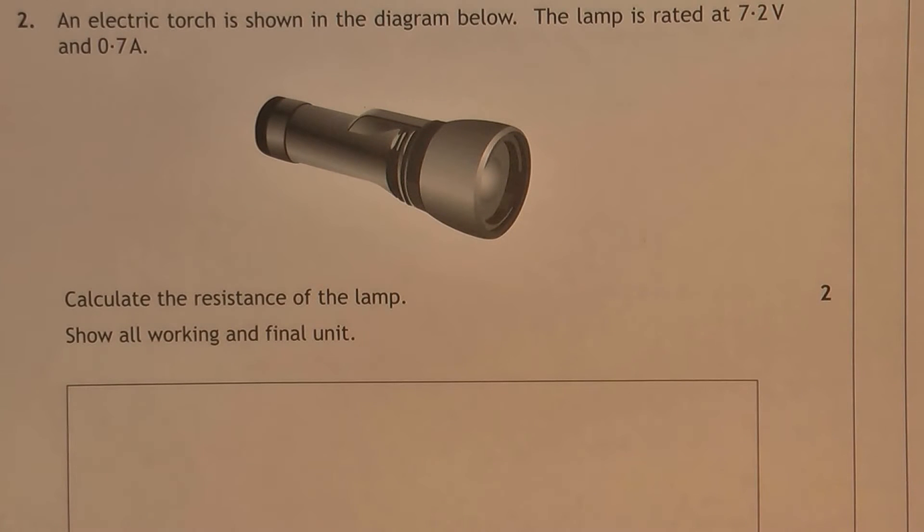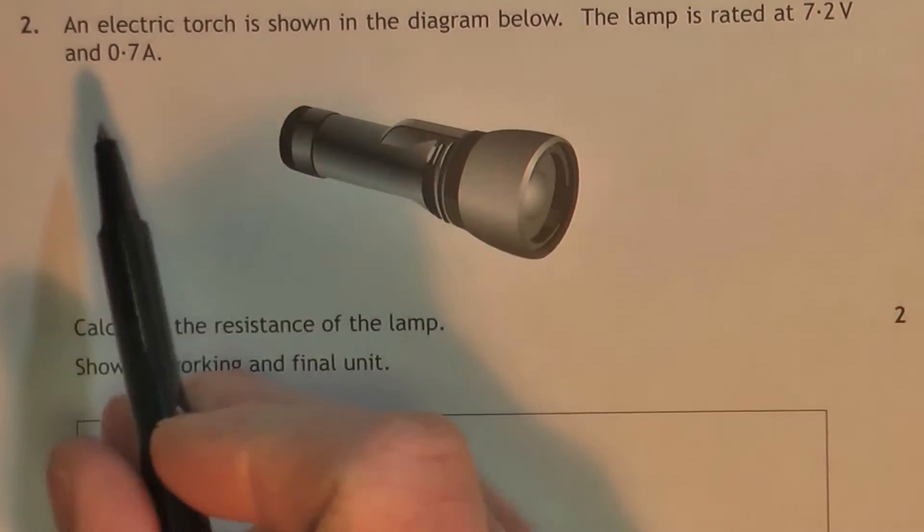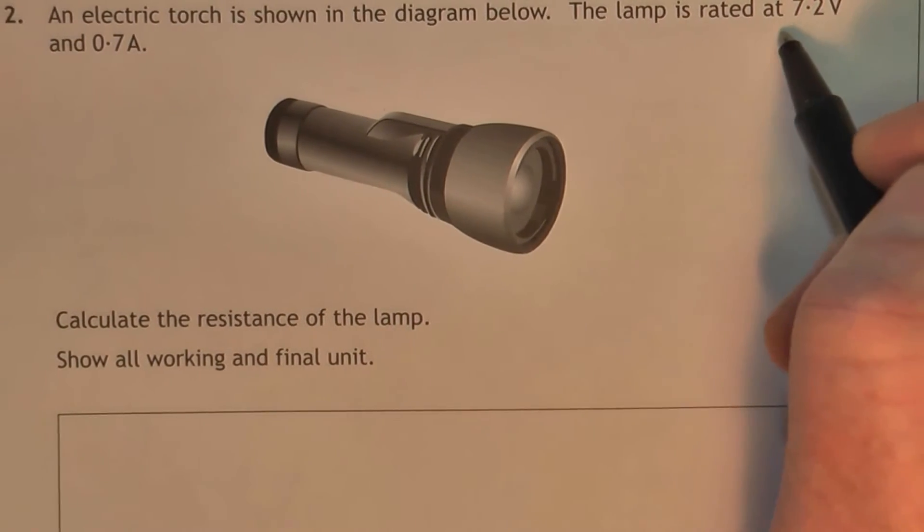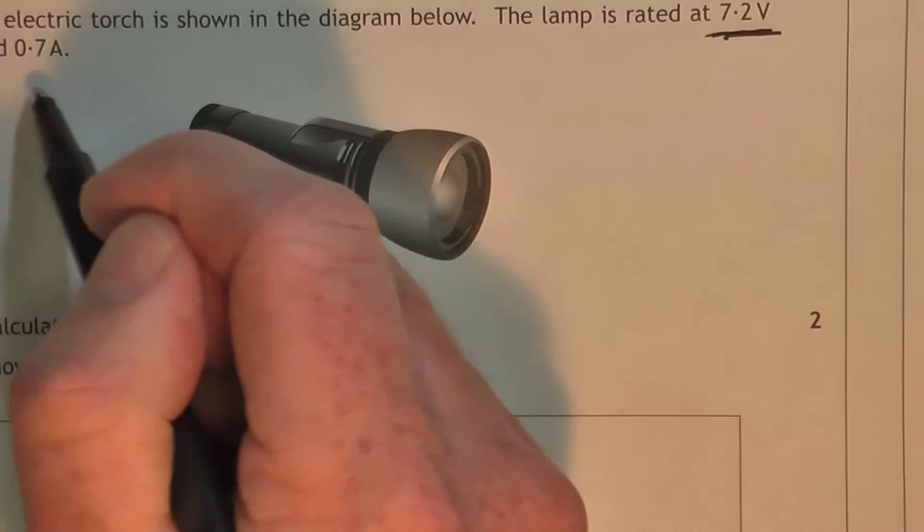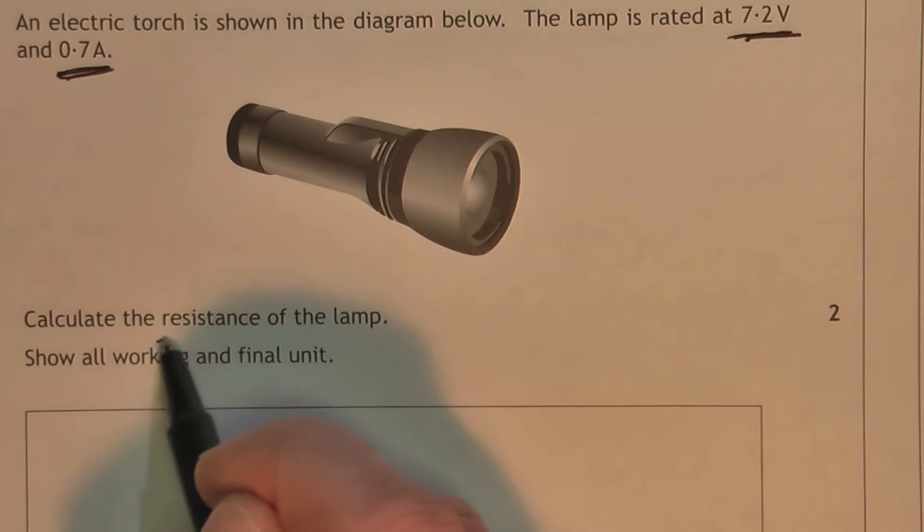Right. Sometimes, if you look at the question, it practically tells you what to do. This one, the lamp is rated at 7.2 volts, 0.7 amps. So that's what it's told you. Then it says, calculate the resistance.